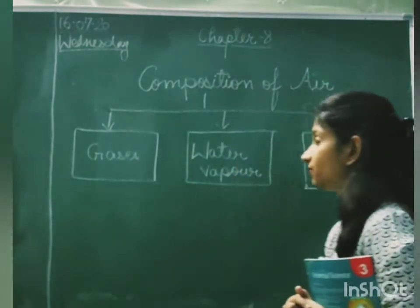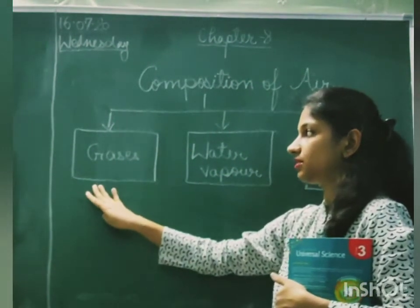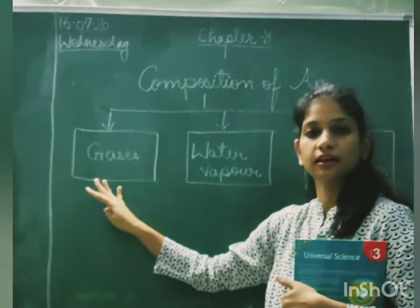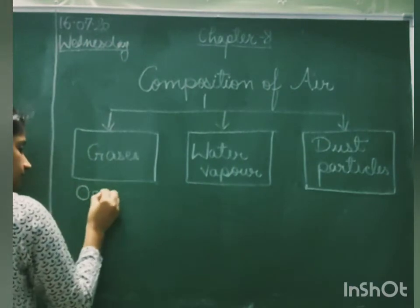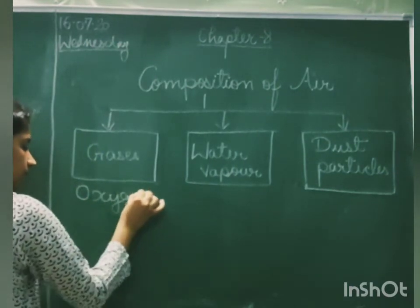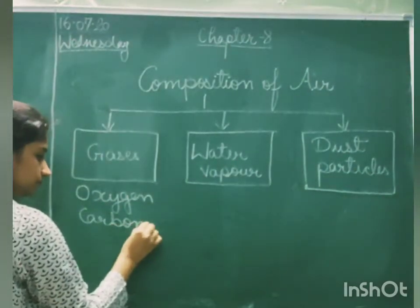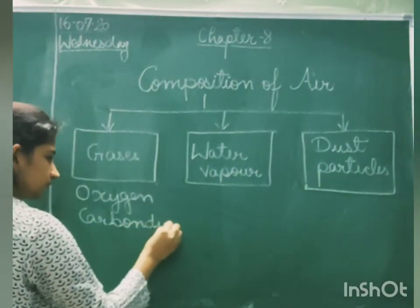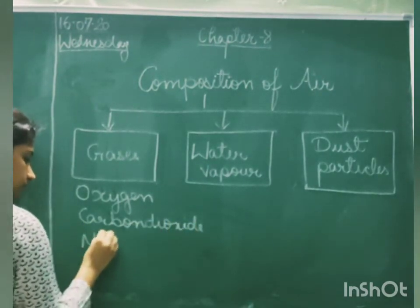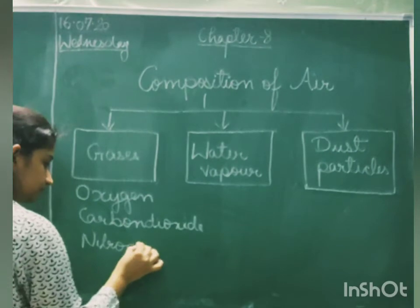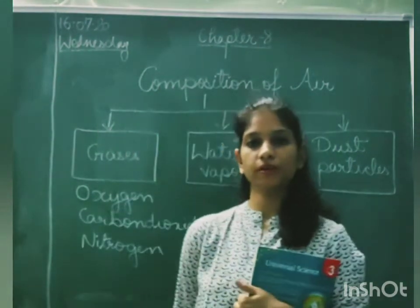So what is the composition of air? The composition of air is basically divided into three parts. The first one is gases — gases include oxygen that we breathe in, carbon dioxide, and nitrogen. Then water vapor.